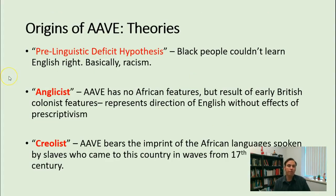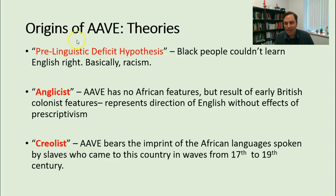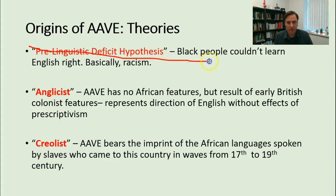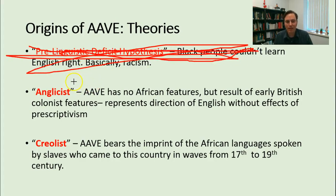The first thing we're going to talk about is the origins of Black English. There are three theories. One was the pre-linguistic deficit hypothesis, popular in the early 20th century, which held that black people couldn't learn English correctly — and that's why they spoke what was considered substandard English. This is grotesquely racist and nobody respectable holds this opinion anymore. Even over a hundred years ago, if you read W.E.B. Du Bois or Booker Washington, it's obvious that black people could learn English. You learn the language you're exposed to. We're not taking this seriously.